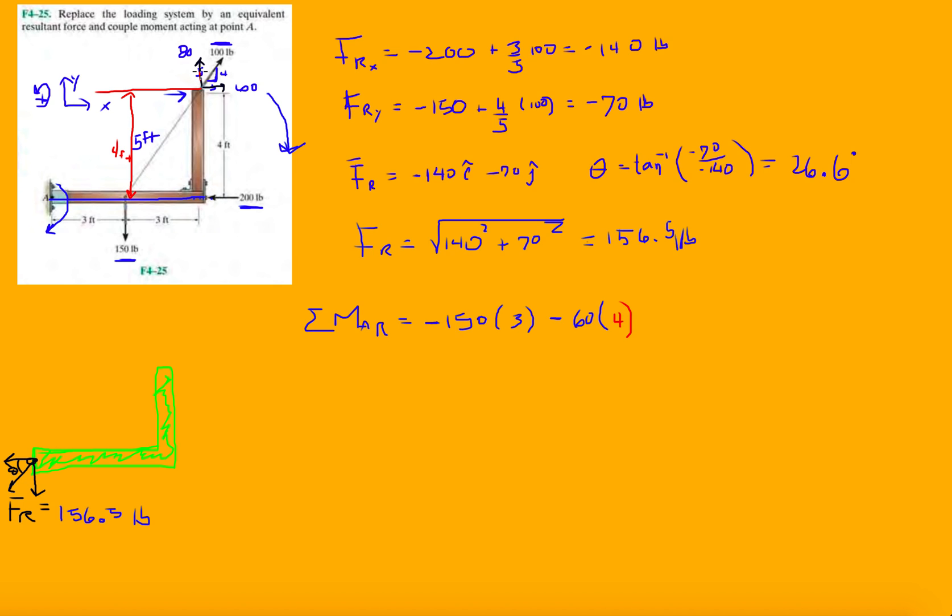The 80 pound force is pushing up on this board, trying to rotate it counterclockwise in the opposite direction, so this will be +80 times 6 feet. So the resultant moment is -150(3) - 240 + 80(6), which equals -210 pound-feet.